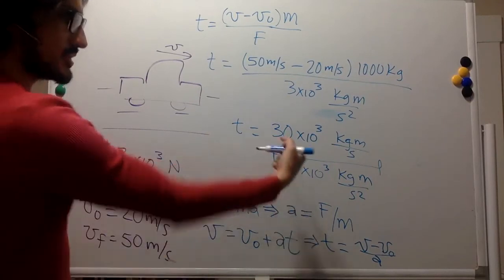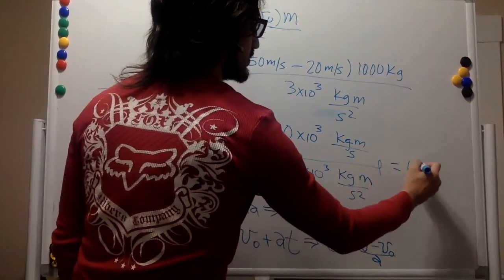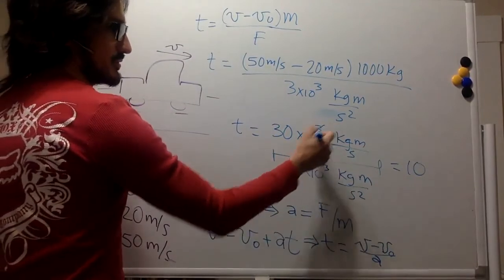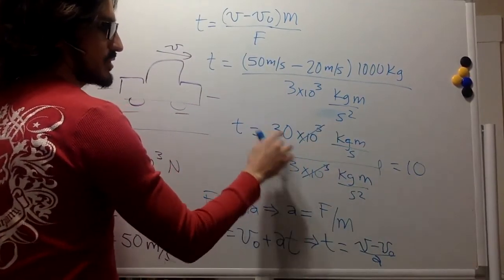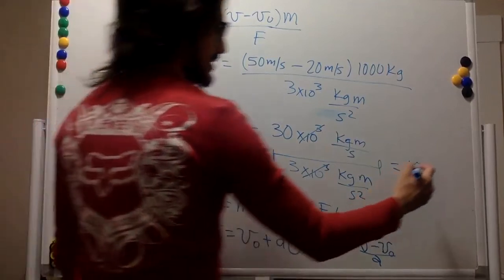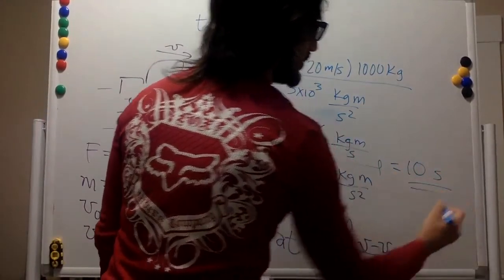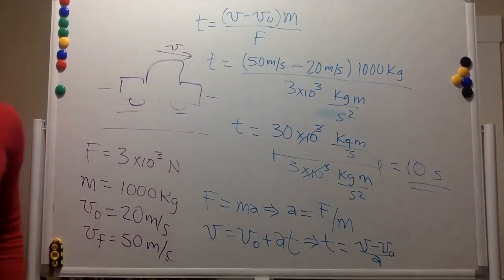We can just divide this is going to be 10. We can cancel this out, and 30 divided by 3 is 10, so 10 seconds. And that is the answer.